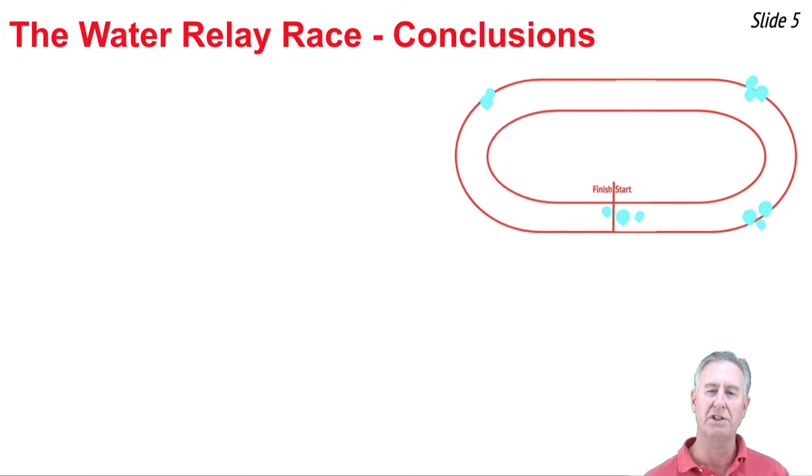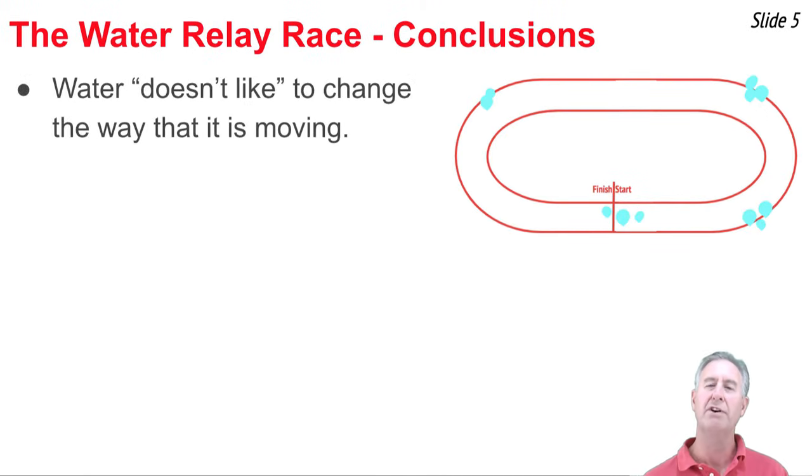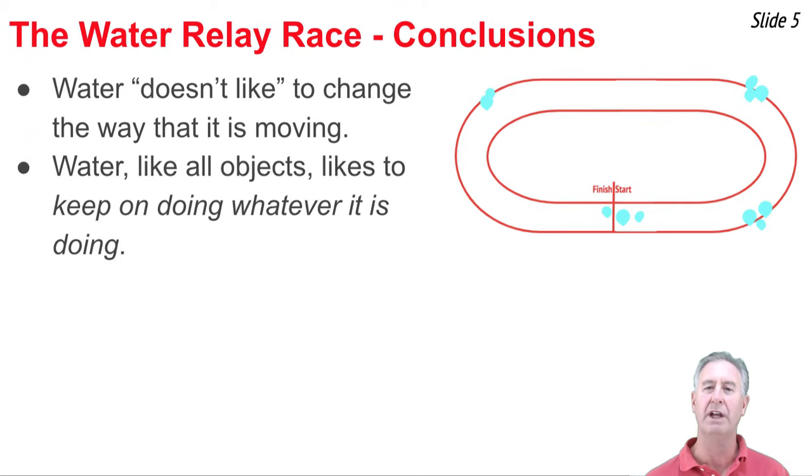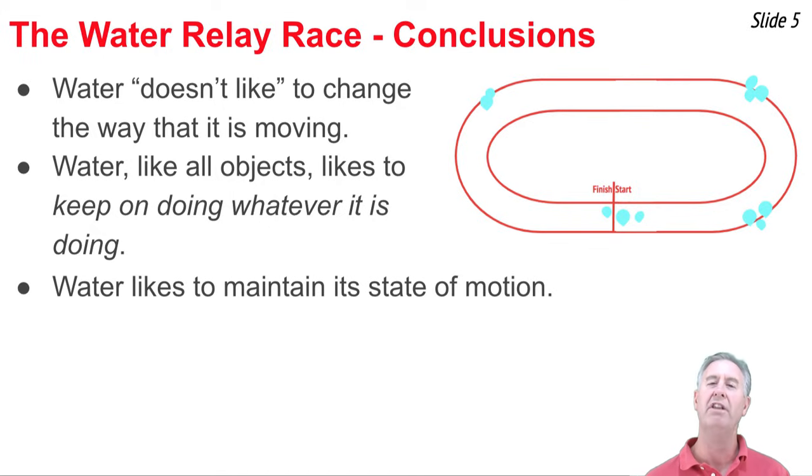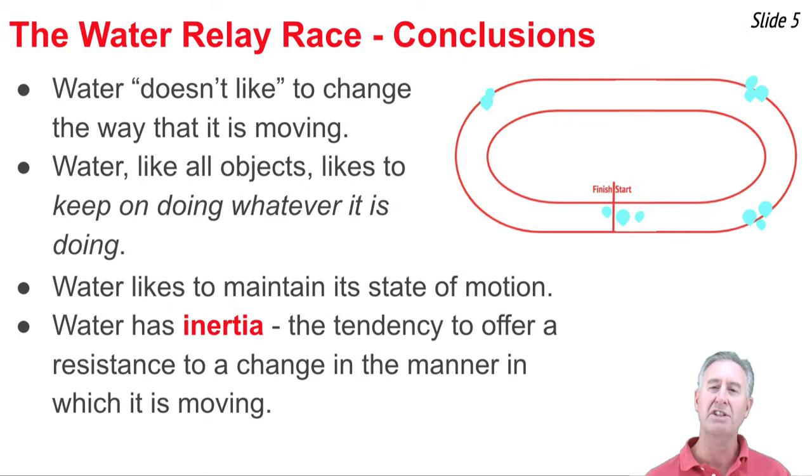So what conclusions does this lead us to about water? First, it leads us to the idea that water doesn't like to change the way that it's moving. It likes to keep on doing whatever it's doing. Like all objects, if it's at rest, it wants to stay at rest. And if it's moving, it wants to continue moving at that same speed in that same direction. Water likes to maintain its so-called state of motion. Water has this thing that we call inertia. It's a property of objects that causes them to resist changes in the way that they're moving.